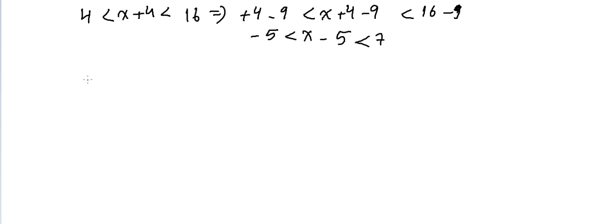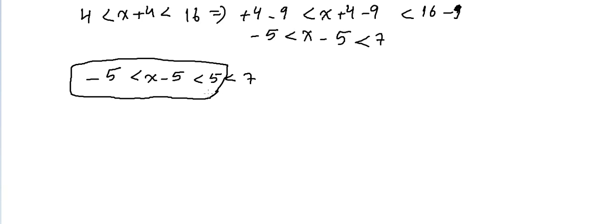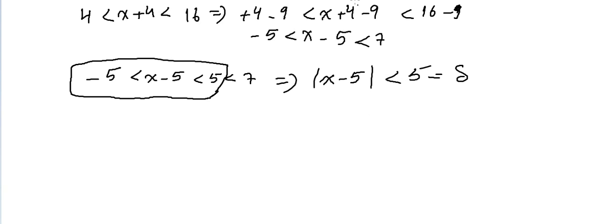We can also write this as minus 5 less than X minus 5, which is less than 5, which is less than 7. We choose the minimum point to ensure X is close to 5. Delta is the minimum we can reach, so the absolute value of X minus 5 is less than 5. This is Delta, which in terms of epsilon is 5 times epsilon.